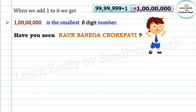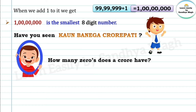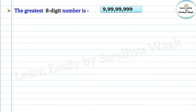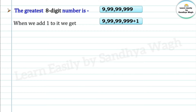How many of you have seen 'Kaun Banega Crorepati'? Do you know how many zeros are in a crore? The smallest eight-digit number is called one crore, and a crore has seven zeros. Similarly, the greatest eight-digit number is eight nines.